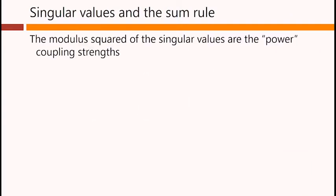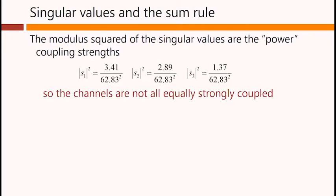The modulus squared of the singular values are the power coupling strengths in this problem. So these numbers here that we get from that eigenproblem. So we see, first of all, that the channels are not all equally strongly coupled. These numbers are somewhat different.